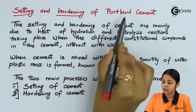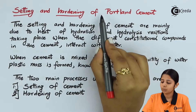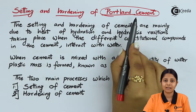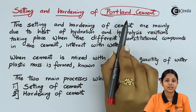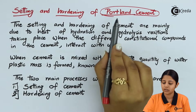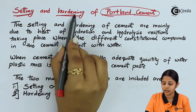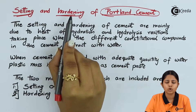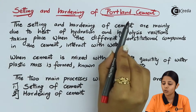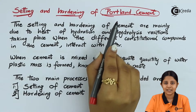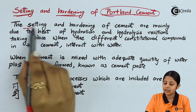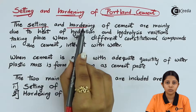Portland cement is one of the most commonly used and highly utilized cements. These cements are extremely good at both properties — setting and hardening — and that is the reason why for almost all construction processes and construction businesses, Portland cement is used. Let us study these properties in detail.